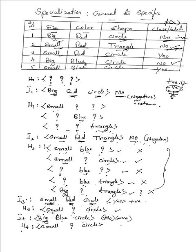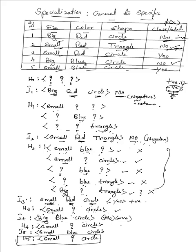Next, read I5. In I5 we have small, blue, circle. Our hypothesis H4 is (small, ?, circle). I5 has small — matches; blue matches question mark; circle — matches. So H4 also satisfies instance I5. The same hypothesis (small, ?, circle) satisfies all instances. This is the final hypothesis generated which satisfies all the instances.